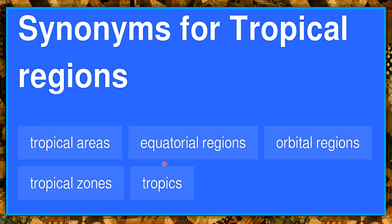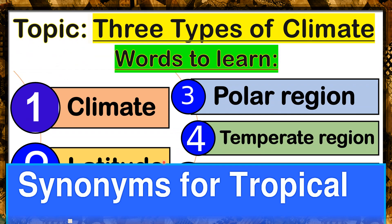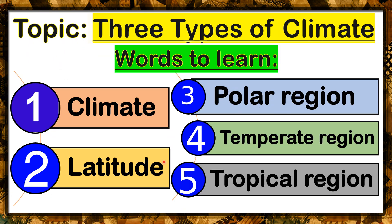From the word equatorial regions, it means that this area is near the equator. So these are the five words that can help us better understand our topic for today. Let's read them one more time: climate, latitude, polar region, temperate region, and tropical region.